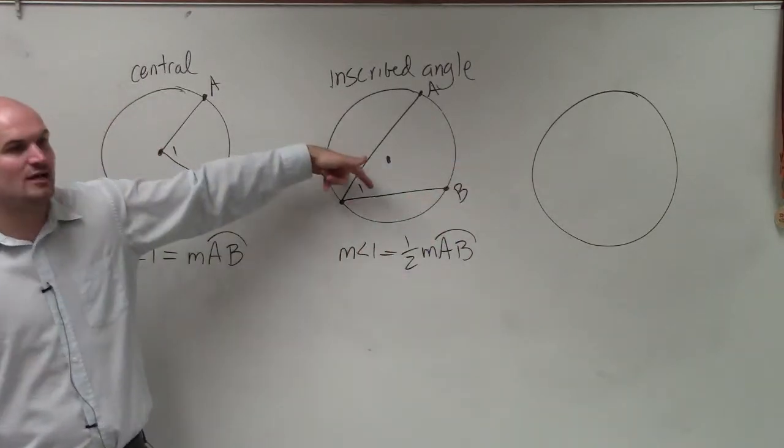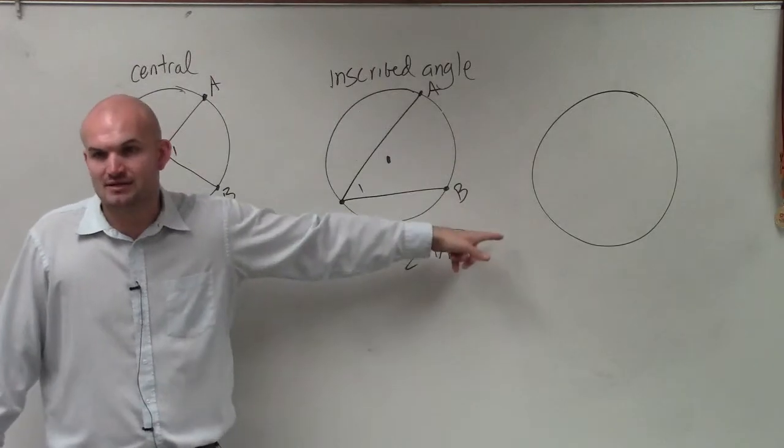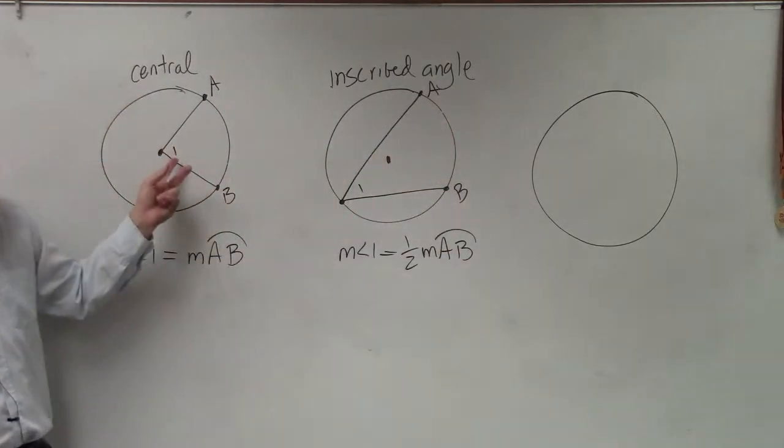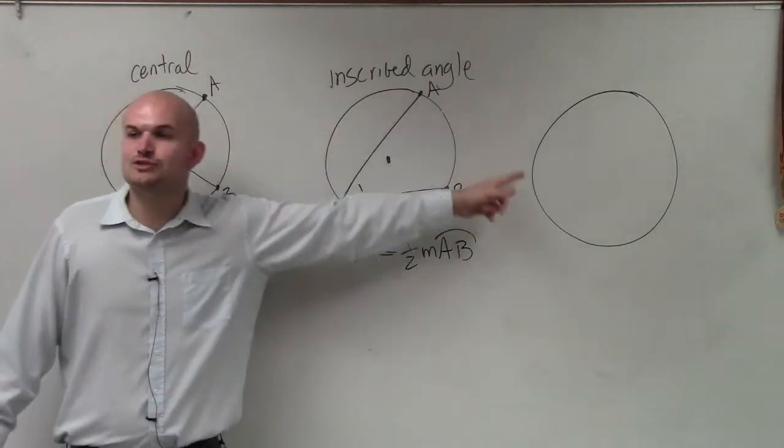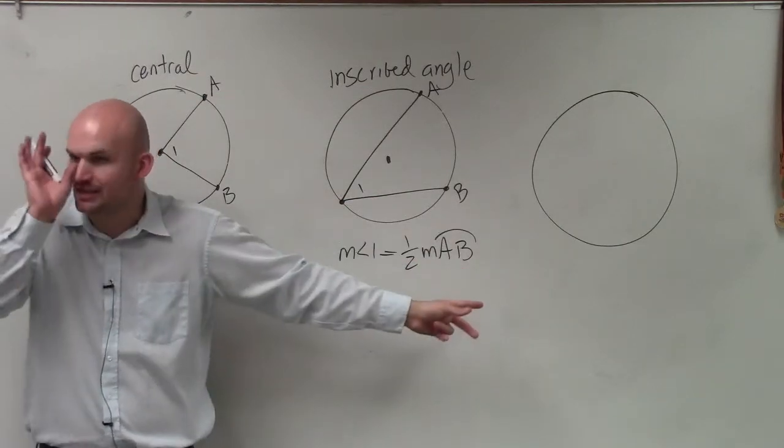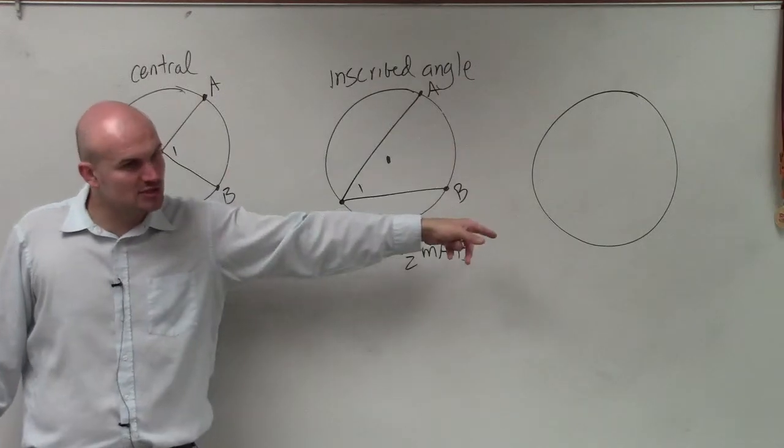So therefore, if I say this angle is 30 degrees, then the arc measurement is 60. If this is 60, that's 60. If this is 60, that's going to be 120, because this angle is 1 half of what that arc is. So if that's 60, the arc measure is 120.